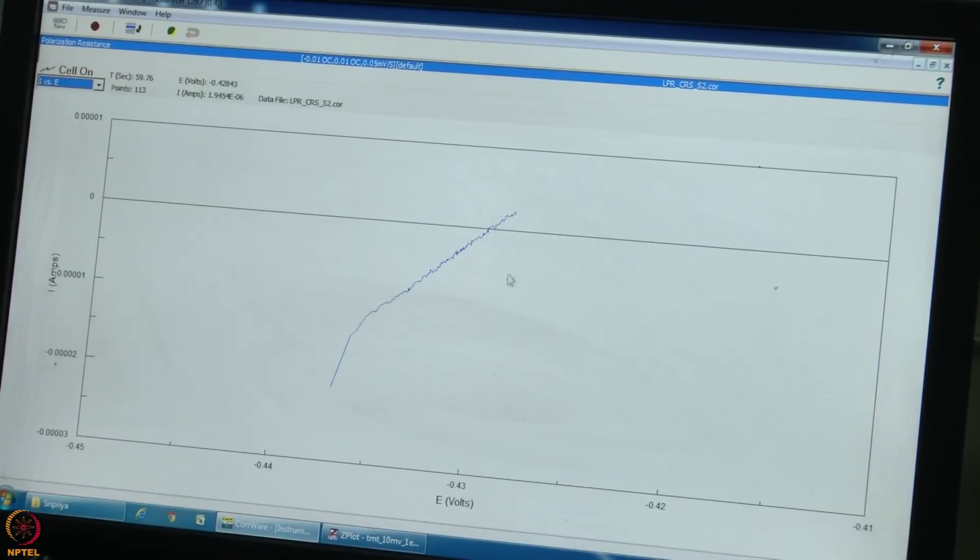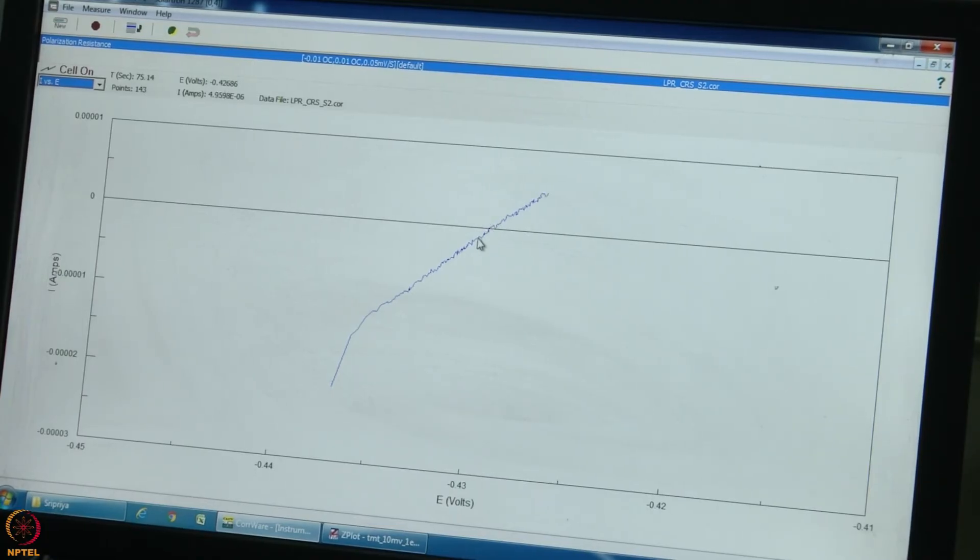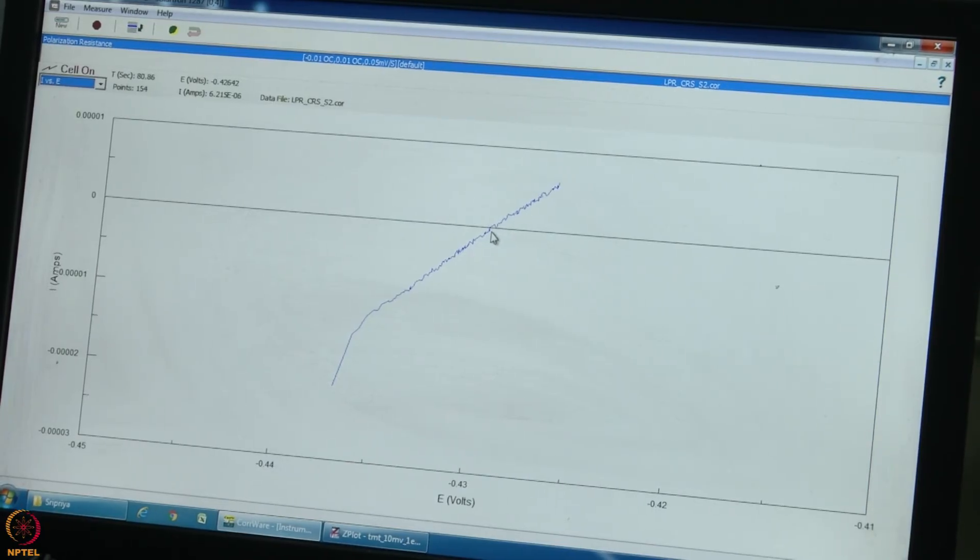When this curve crosses, this is near to the open circuit potential what we measured initially. We want to get the slope near to this point. Once the experiment is over, we will get the slope of this curve then take that as a polarization resistance value.